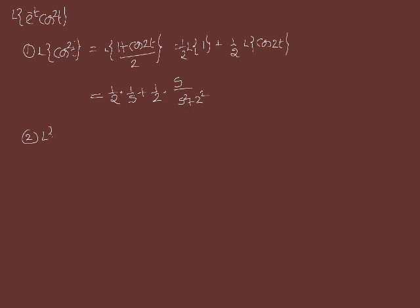Since we require Laplace of e^(-t)·cos²(t), and we have e^(-t), we replace s with s + 1. The answer is: 1/(2(s+1)) + (1/2)·(s+1)/((s+1)² + 4). This is the answer.